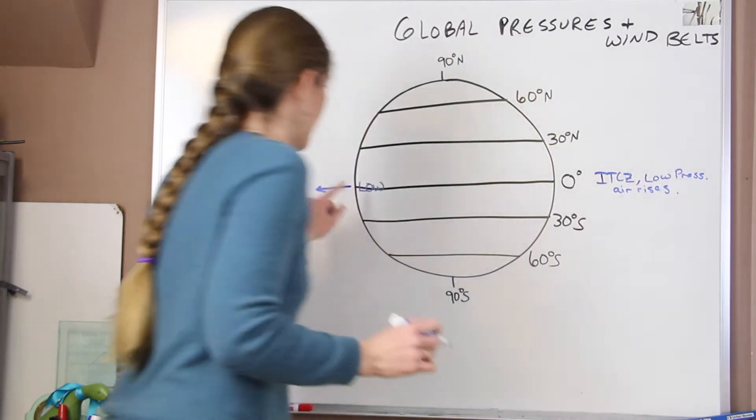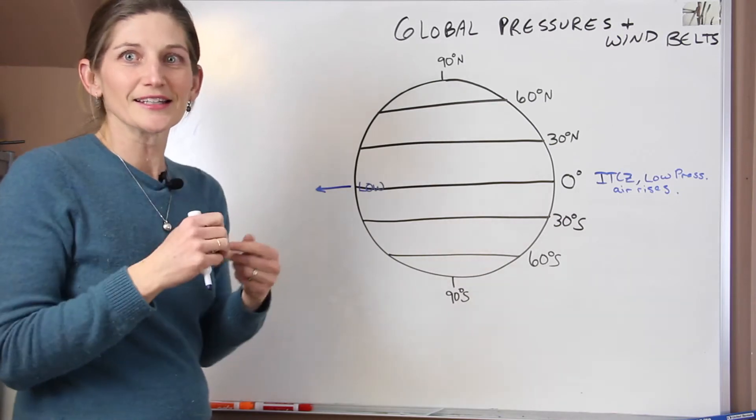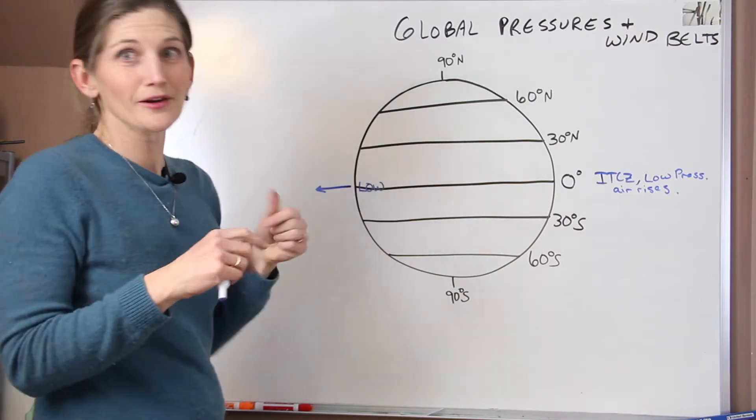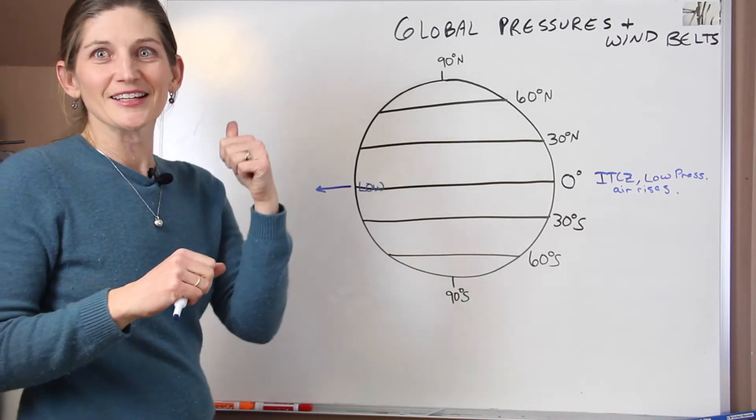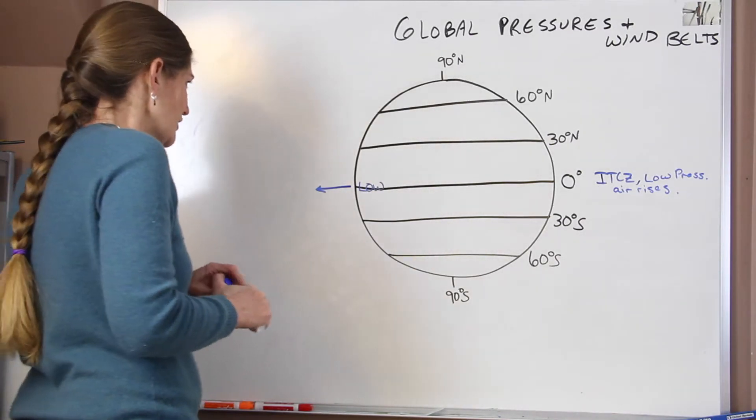That low pressure is our ITCZ, our intertropical convergence zone. And this is also called the equatorial trough. But this is a place where we have warm air. It's a low pressure. And air rises. As air rises, it's going to cool adiabatically, it condenses, and it leads to rainstorms. So at the equator, daily thunderstorms are pretty common. So we get clouds and rain.